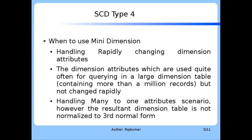When to use Mini Dimension? Mini Dimension is used for addressing rapidly changing dimension attributes — specifically the dimension attributes which are used quite often for querying in a large dimension table, but they are not changed rapidly. It also applies to many-to-one attribute scenarios. However, the resultant dimension table is not normalized to third normal form.